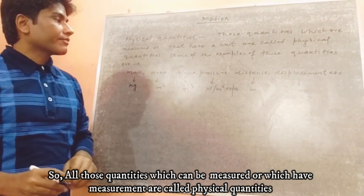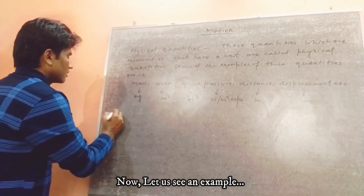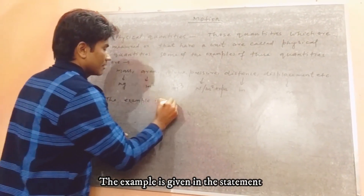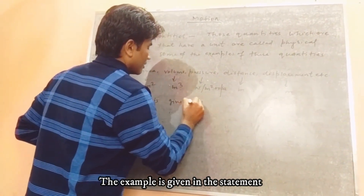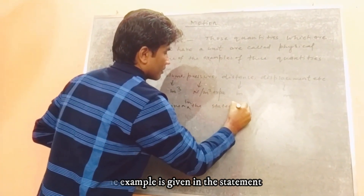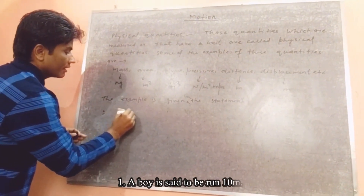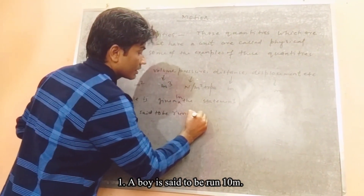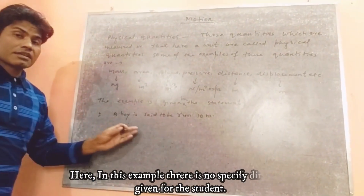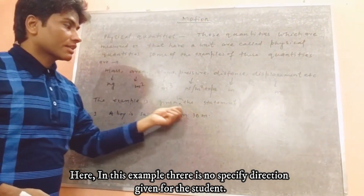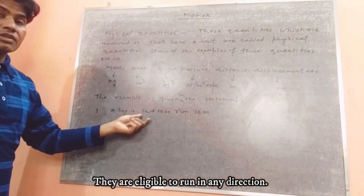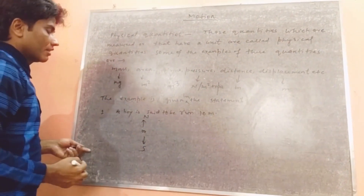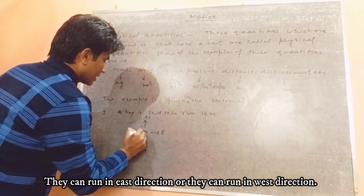Those quantities which can be measured are known as physical quantities. Now let us take an example. A boy is said to run 10 meters. In this example, there is no specified direction given — the student is eligible to run in any direction: north, south, east, or west.